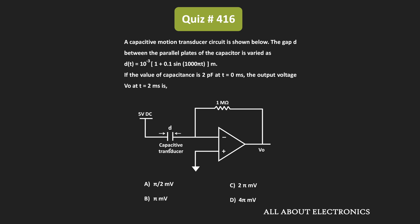If you observe this circuit, here we have the capacitive transducer. As you can see, the gap between the two parallel plates is changing with time, and its variation can be given by this expression. That means here, its capacitance is also changing with time. So here, we have been asked to find the output voltage at t equal to 2ms.